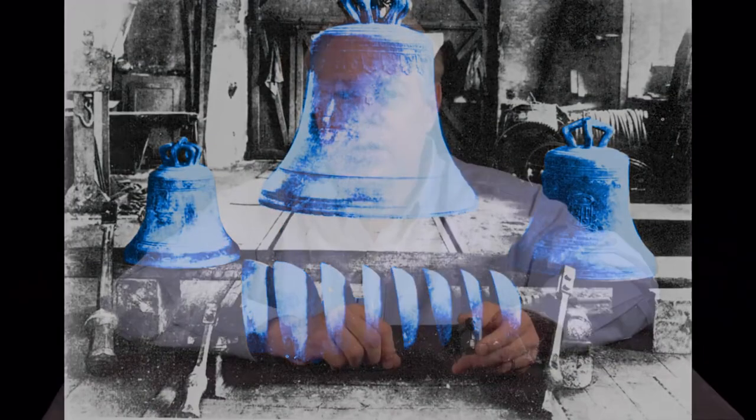Automated music boxes began as cumbersome sets of bells struck by hammers, but over the course of several hundred years, they've evolved into compact devices like this one.